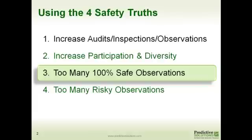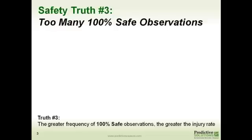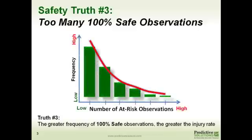More specifically, finding too many 100% safe observations from your observers. Safety truth number three focuses on how many of your observations are turned in with 100% of the safe things checked off. When people are turning in these checklists with 100% safe, that tells me something's going on in the culture. Very seldom are you ever going to go out and find 100% of things safe. Either no one's looking at the data and you're wasting your valuable observation intelligence, or people just aren't bought in and they don't really care.